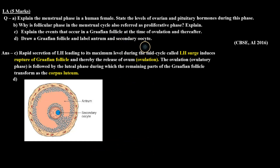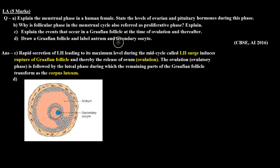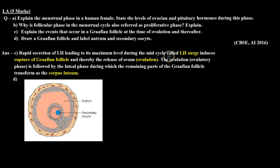C part mein humein batana tha ki ovulation ke time aur ovulation ke baad Graafian follicle mein kya hota hai. Toh ovulation ke time LH ka secretion maximum hota hai, jisko bolte hain LH surge, jiski wajah se Graafian follicle rupture kar jaata hai aur usme se ovum release ho jaata hai — isko bolte hain ovulation. Aur ovulation ke baad luteal phase mein remaining Graafian follicle transform ho jaata hai corpus luteum mein.